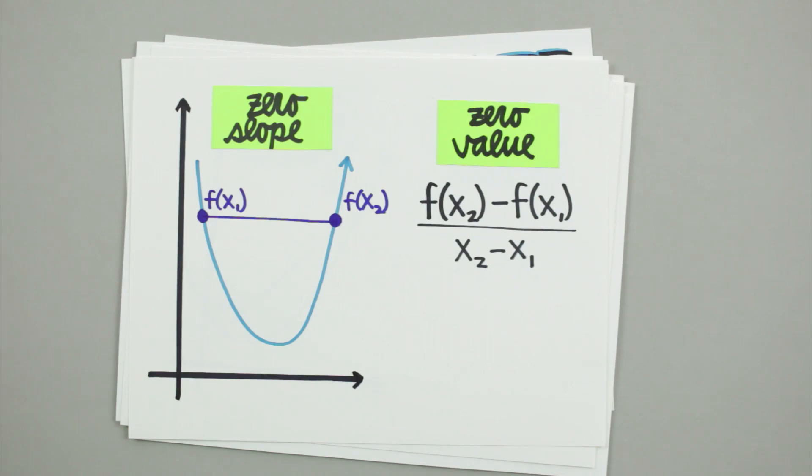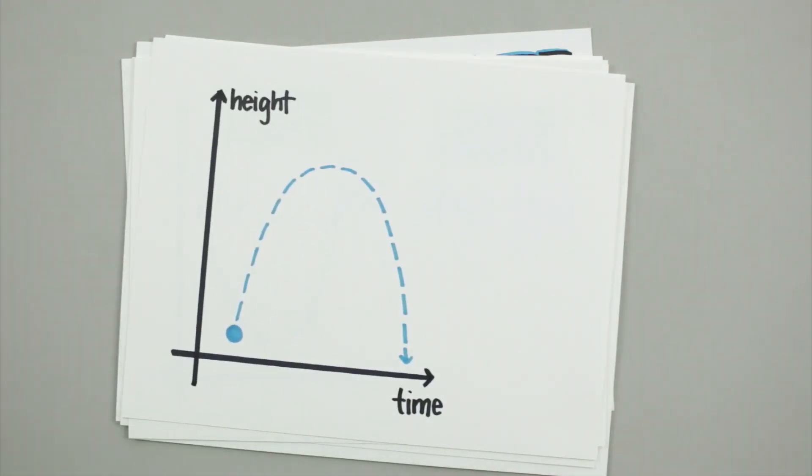This can sometimes be tricky because even if the average rate of change is zero, it doesn't necessarily mean that no change occurred. After all, if I threw a ball into the air and it came right back into my hand, the graph of its change in height over time would look like this. The ball definitely moved, but if I asked you for the average rate of change from this point to this point, you'd get zero.